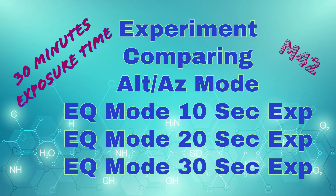I'm recording this while I'm imaging, just so that I can keep up with the video making while it's doing the imaging and I'm just waiting. The plan is to do 30 minutes of exposure time on each of the options. The options I'm going to compare are the Alt-Z Azimuth mode, and then the EQ mode at 10 seconds, 20 seconds, and 30 seconds of exposure.